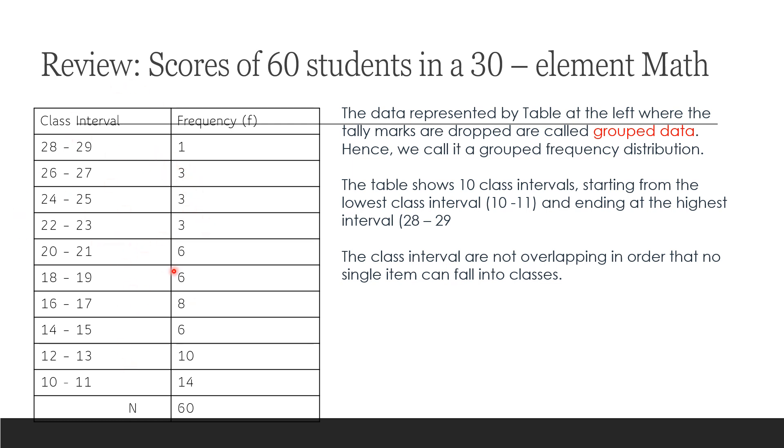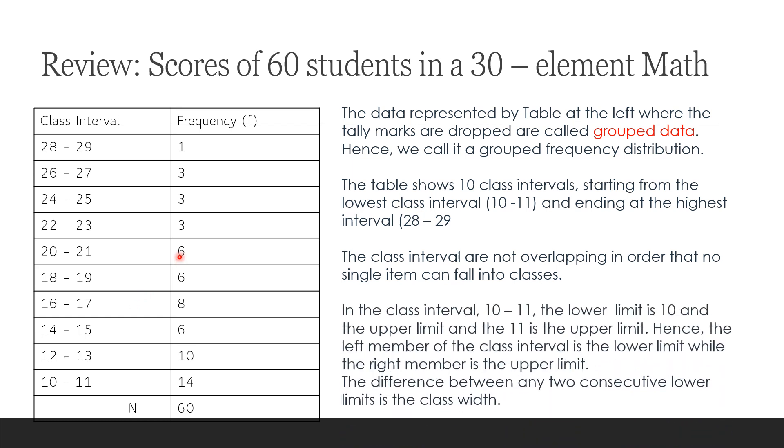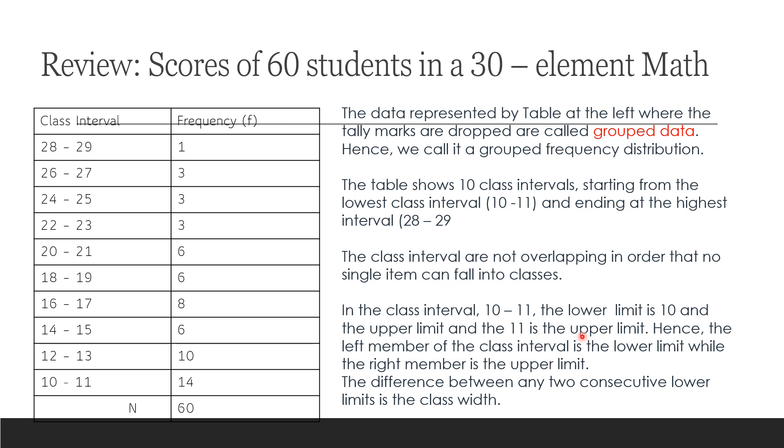The class intervals are not overlapping so that no single item can fall into two classes. In the class interval 10 to 11, the lower limit is 10 and upper limit is 11. All the numbers here we call lower limit, and we call this upper limit. UL stands for upper limit. I told you last time LB, but it should be UL now. And these are the frequencies.